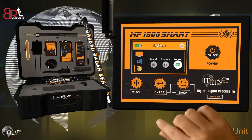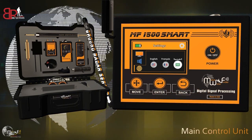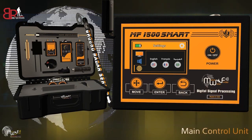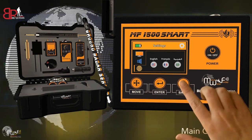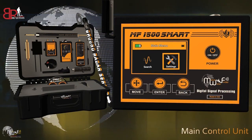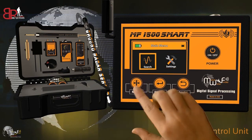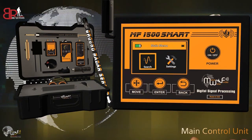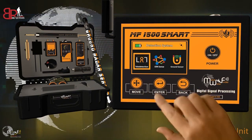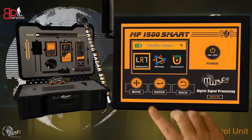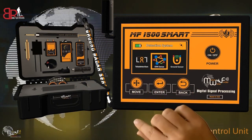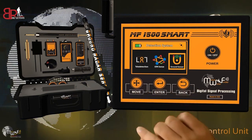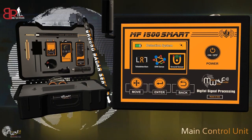Choose the desired language and then return to the main menu. Navigate to the search menu to select the desired detection system: Remote Detection System, Ionic Detection System, or Ground Sensor System.